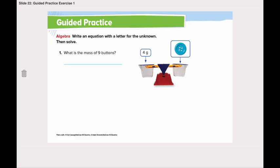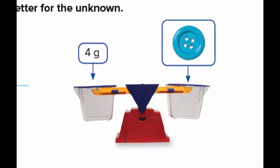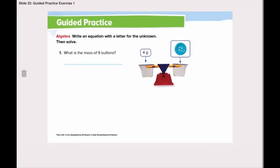Let's move to the guided practice. It says, write an equation with the letter of the unknown, then solve. What is the mass of 9 bottles? Let's take a look at the picture here. Here the bucket says that 1 bottle is equal to 4 grams. So what will 9 bottles be equal to? Again, we will multiply. 9 multiplied by 4 grams will be? Yes, it will be 36 grams.